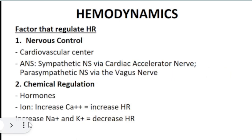The factors regulating heart rate include neural regulation — sympathetic stimulation activates cardiac nerves releasing epinephrine and norepinephrine, increasing sodium and calcium permeability — and parasympathetic stimulation via the vagus nerve releasing acetylcholine, increasing potassium permeability. Hormones — epinephrine and norepinephrine produced by the adrenal medulla — also regulate heart rate.